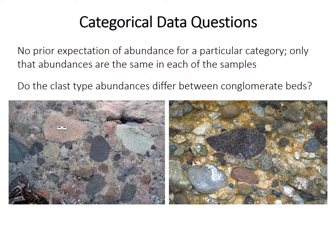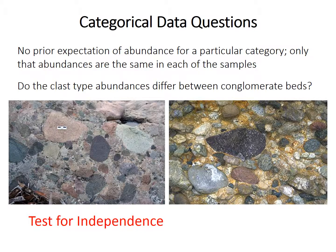The other situation is where you have counts in more than one sample. Let's say you counted different rock types in two or more different layers of conglomerates. We have no prior expectation — no reason to think there should be 25% or 50% granite. So we want to know if the abundances of different rock types are the same or significantly different across the multiple layers. In that case, we're performing a test for independence. More on tests for independence in future videos.